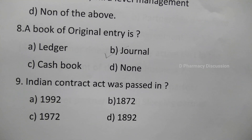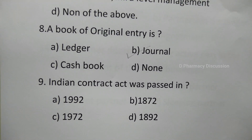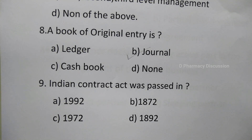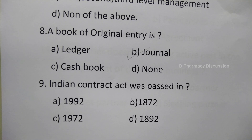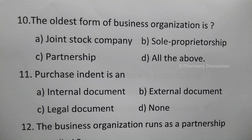Question 9: The Indian Contract Act was passed in — option A: 1992, B: 1872, C: 1972, D: 1892. The correct answer is option B, 1872.